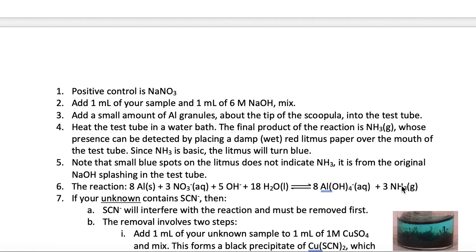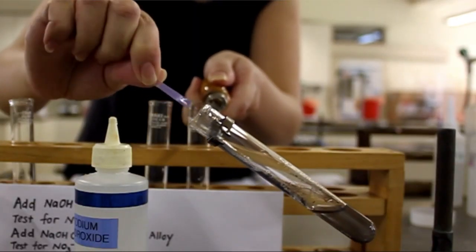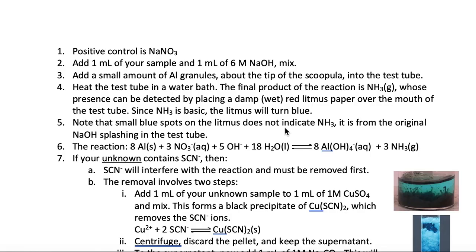Since ammonia is a weak base and it is also a gas, it will evaporate to the top of the test tube and react with the wet litmus and change it to blue. Note that the litmus has to completely change to blue and not just showing small specks of blue. The specks are due to splashes of sodium hydroxide and it's a false positive. So you want to make sure that the whole litmus turns blue.